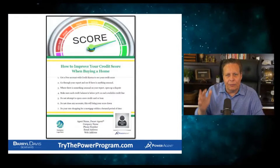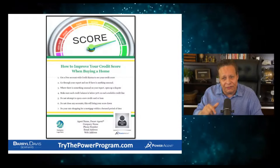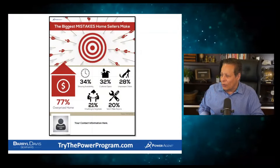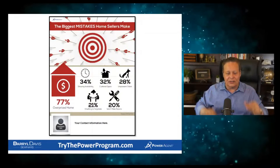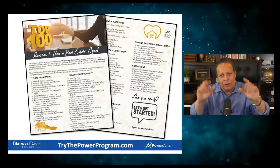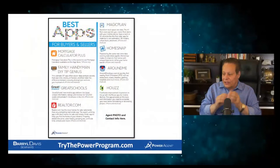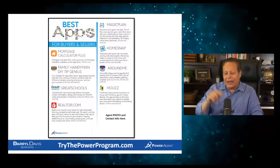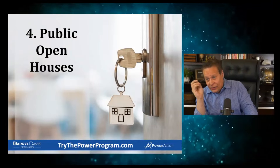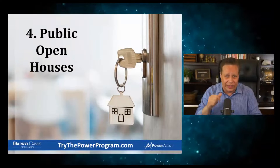Here's another favorite — everybody wants to know how to improve their FICO score, especially first-time buyers. Put that out there. Power agents, look up FICO in the classroom. There's also 'The Biggest Mistake Homeowners Make' — 77% overprice their home based on ActiveRain research. One of my big favorites is 'The Top 100 Reasons to Hire a Real Estate Agent' — front and back makes one powerful piece. You brand it with your marketing info at the bottom. There's also 'The Best Apps for Buyers and Sellers.' Those were just six out of the 700 we have for power agents.